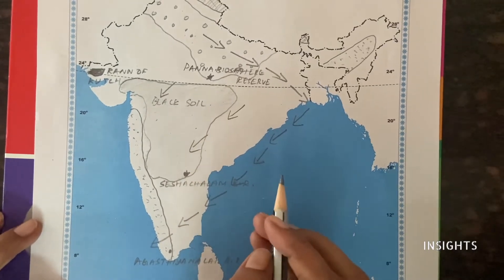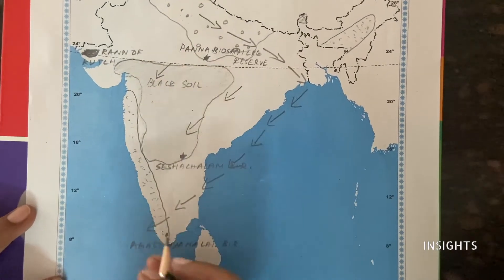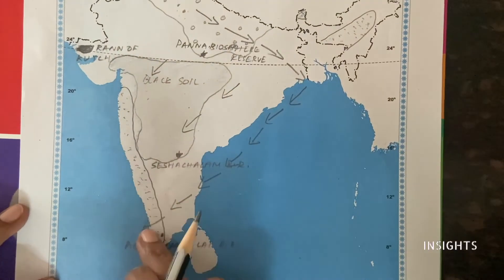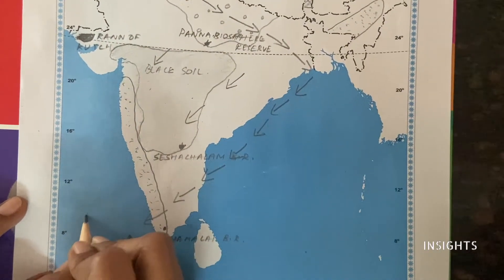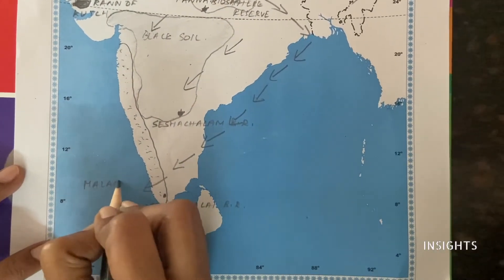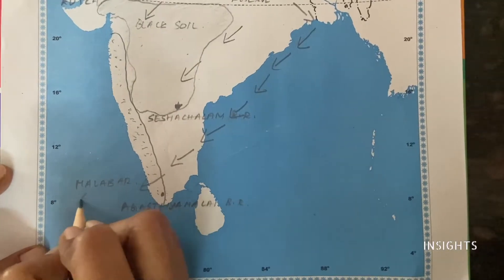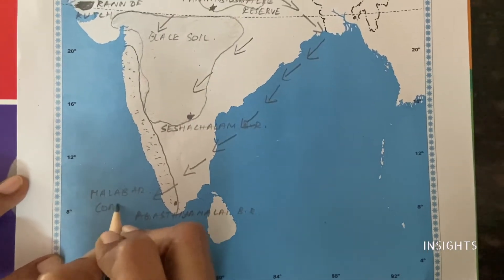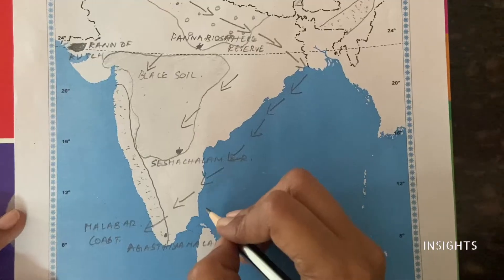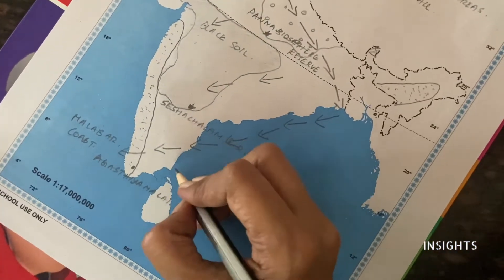And one more coast we will mark. Last time there were no coasts, so now we mark the Malabar Coast. And on the side, we cut the pair with the Coromandel Coast — so we'll just turn it and write Coromandel Coast.